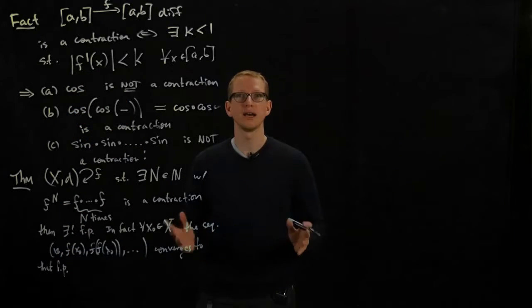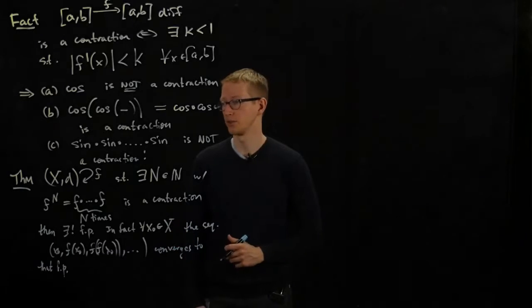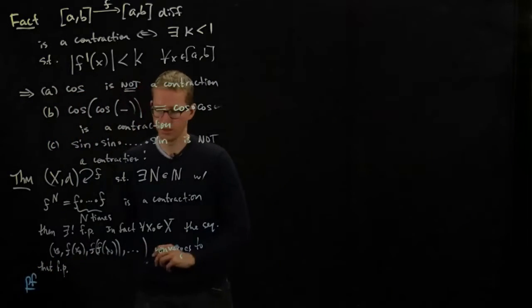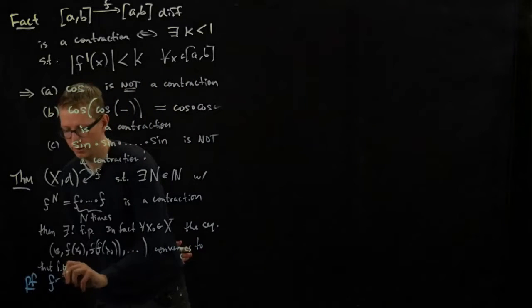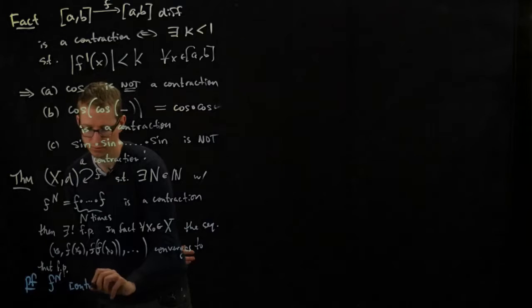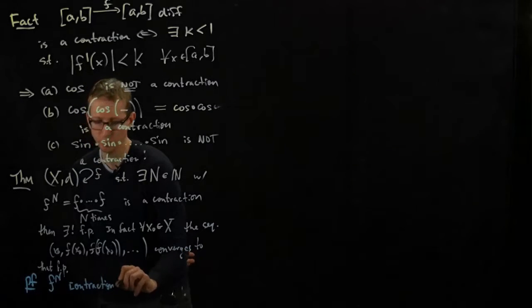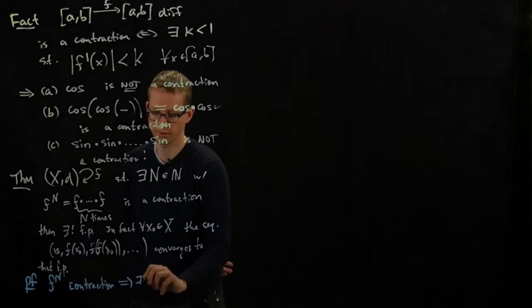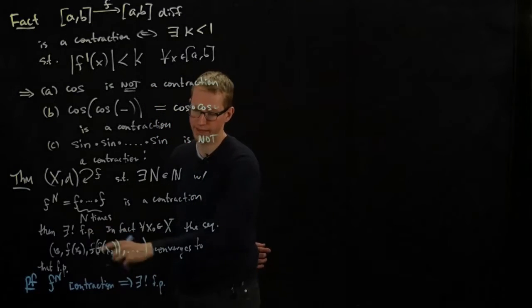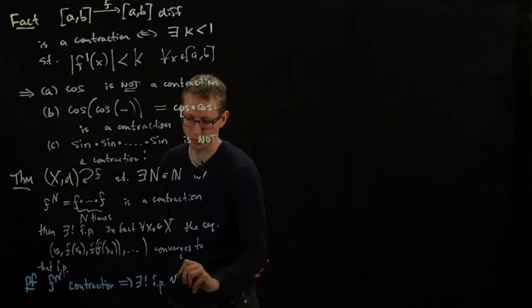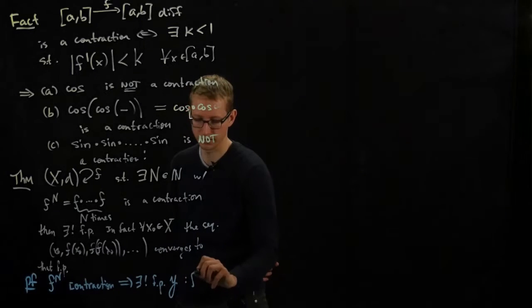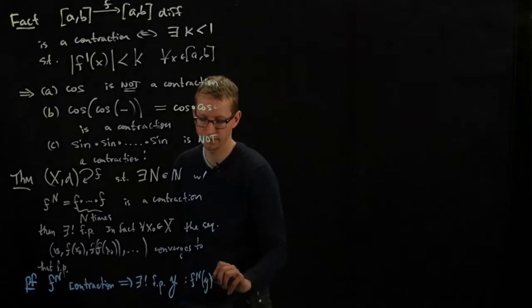And the proof of this theorem relies on the proof of the original mapping contraction theorem. So we know that fn is a contraction. And by the previous theorem, we know that there exists just a unique fixed point. Not for f, but for fn. So let me call that fixed point y. Let me just write this out: fn y equals y.